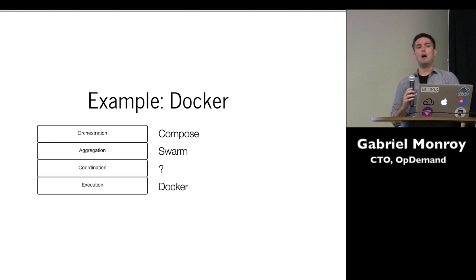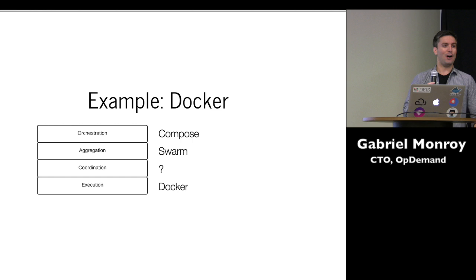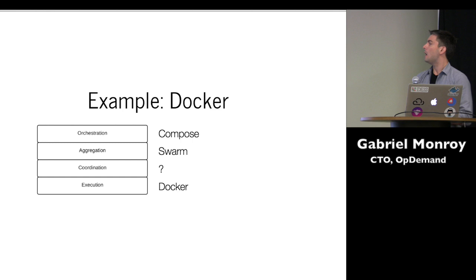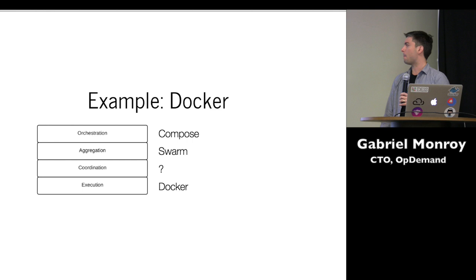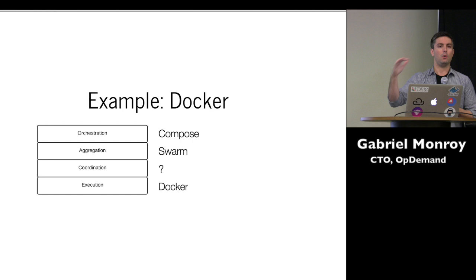Another example is Docker — and this one's interesting because it's really still in flux. The Docker native stack has Docker as the execution agent at the bottom. As I was discussing with Victor recently, there is no coordination system with Swarm right now — there's talk about using something along the lines of Consul, but it's still pretty early. For aggregation, they're looking at Swarm, and I know they're working on some stuff in the networking space. And Compose is the idea that you'd use Compose to write your declarative manifest, which would hit Swarm, coordinated by some cluster coordination system, and ultimately run containers using Docker.